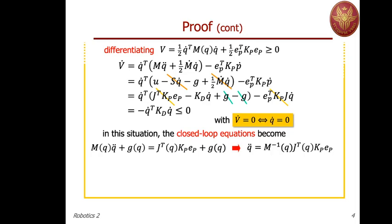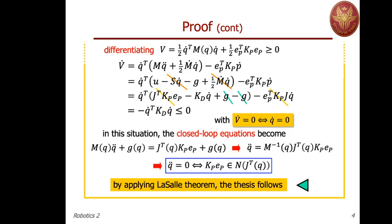V-dot equals zero if and only if q-dot equals zero. We proceed by analyzing the closed-loop equation and invoking LaSalle's theorem. When q-dot equals zero, the velocity terms in the model vanish, leaving M q-double-dot plus g. On the right-hand side, the derivative term also vanishes, leaving J-transpose Kp E_p plus gravity. Isolating acceleration: q-double-dot equals M-inverse J-transpose Kp E_p. Without additional assumptions, acceleration will be zero if and only if the pose error amplified by Kp lies in the null space of J-transpose. By applying LaSalle's theorem, the thesis of our theorem follows.